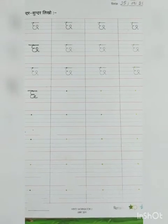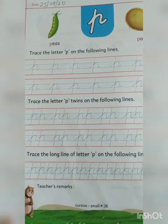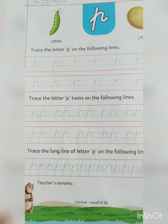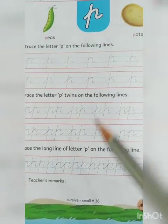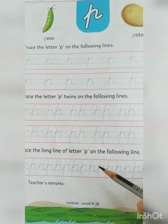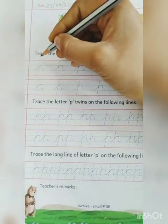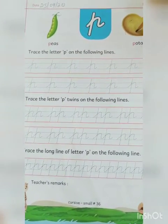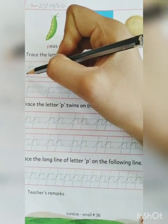Do it in neat and clean handwriting. Do practice of writing it. Now it's time for your English subject. In English, we have done small cursive P in our notebook two times, so today we will write it in your workbook. So kids, open your page number 36, then mention your date 250920. Start tracing from here. P, P for peas and potato. You know very well how to write small cursive P.